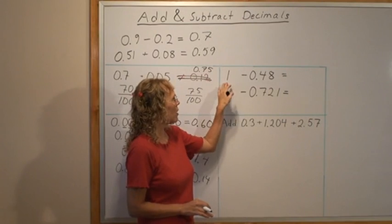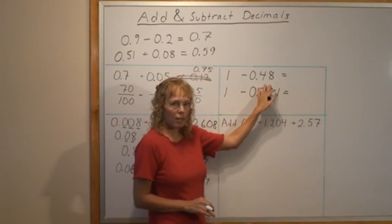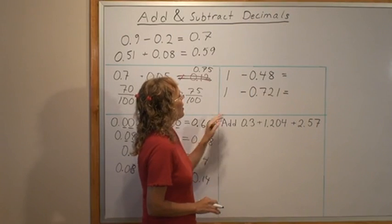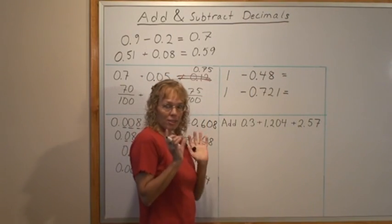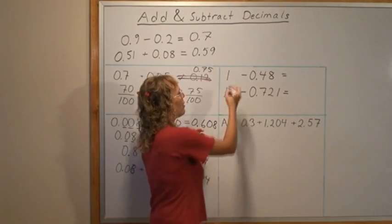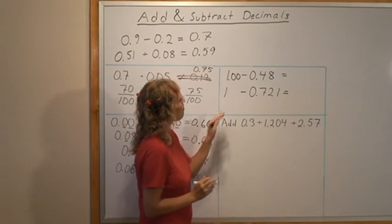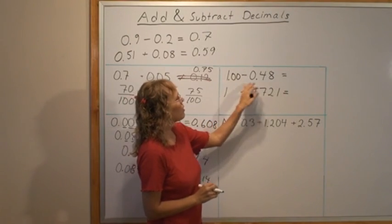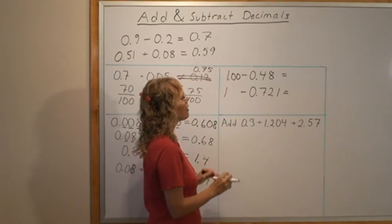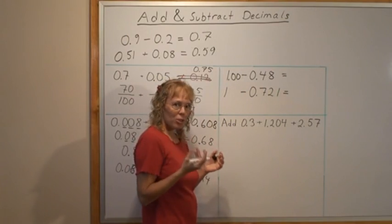Some subtractions, 1 minus 48 hundredths. Think of the 1 as 100 hundredths. You can show it by putting 0, 1.00. Now we have 100 minus 48. You can do that in your head and we get 52 hundredths.